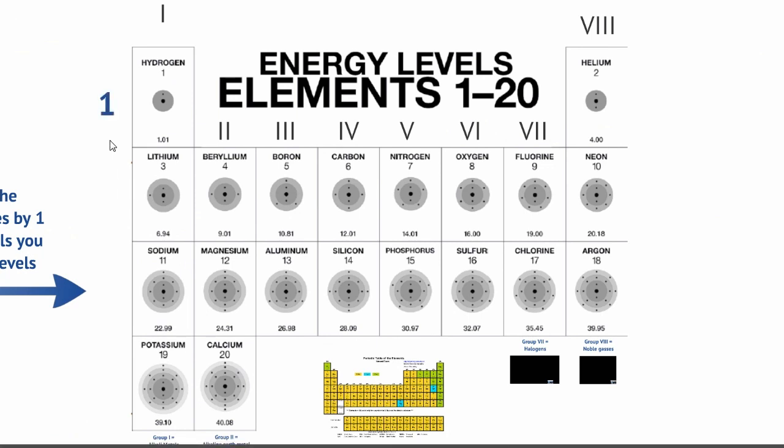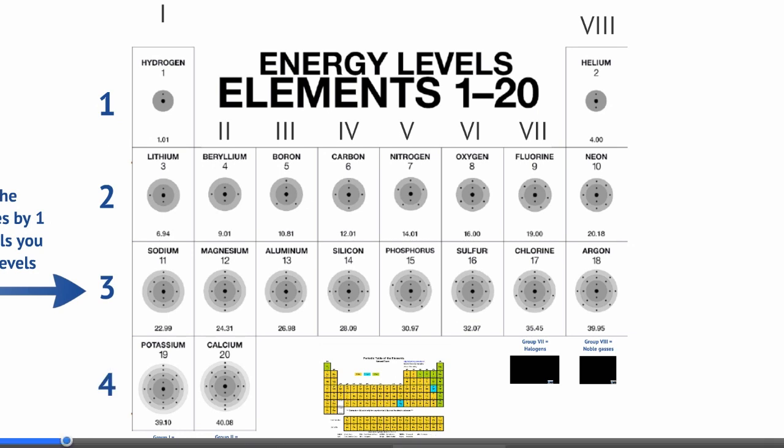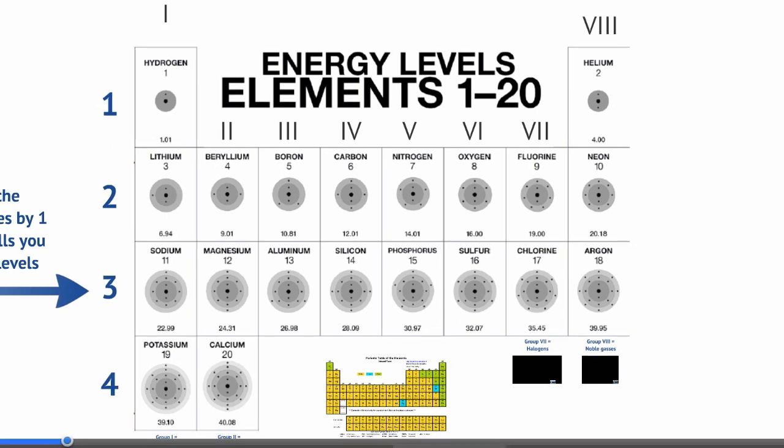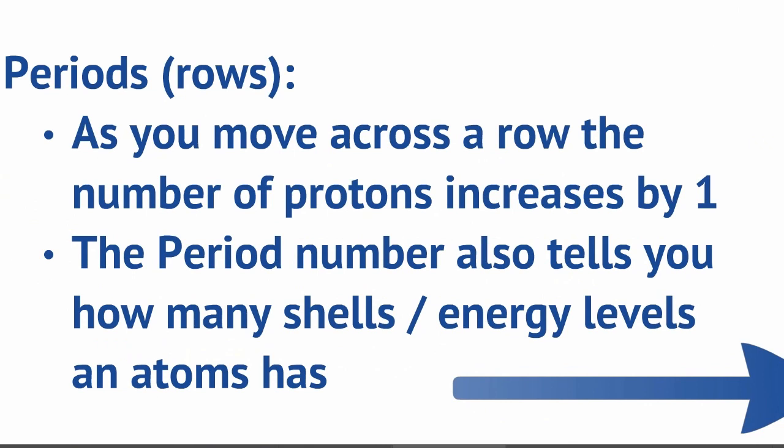Our periods are the rows across — period 1, period 2, period 3, and period 4. As you move across a period, the elements just increase in their number of protons by 1. So the number of protons increases by 1 as you go across — that's probably just a recap from year 8.